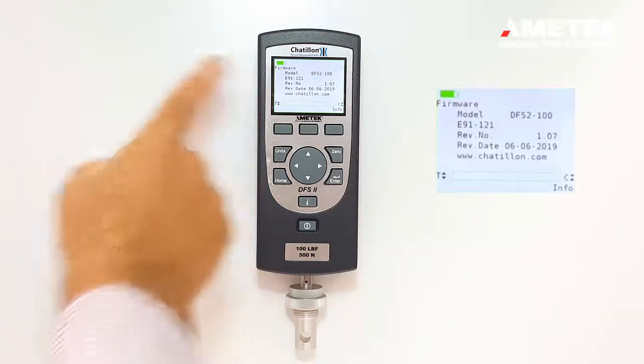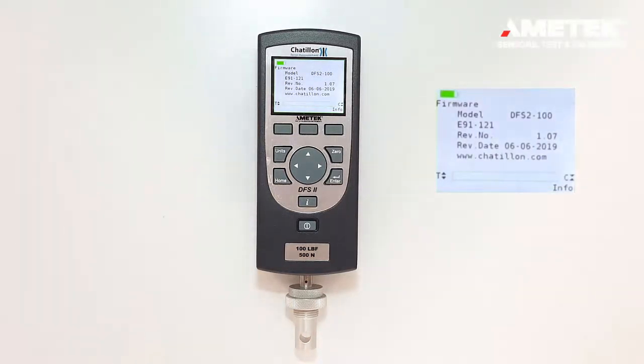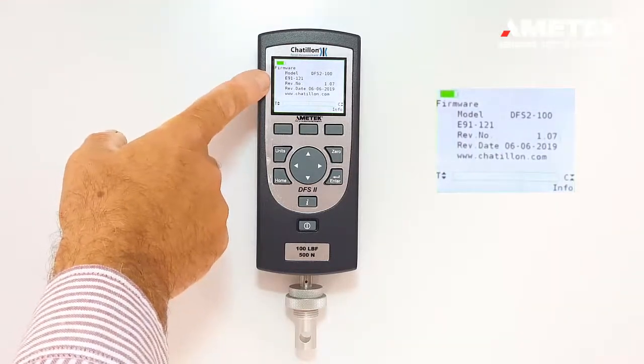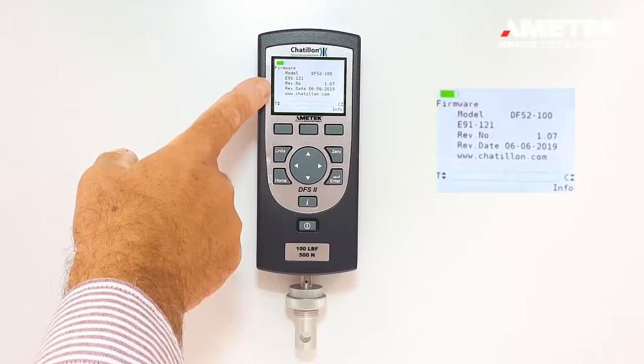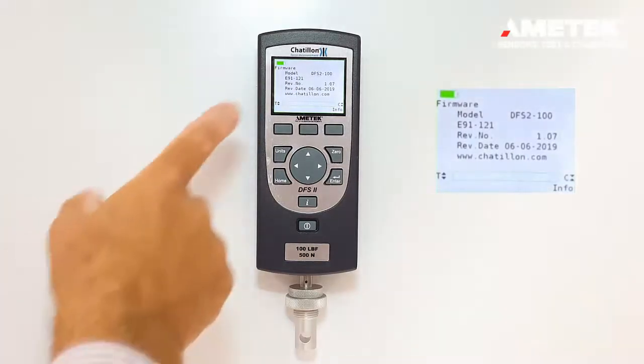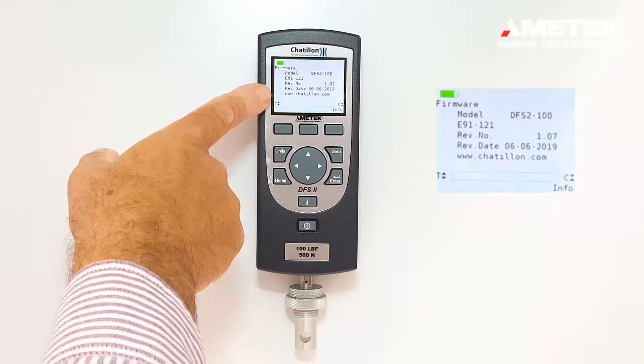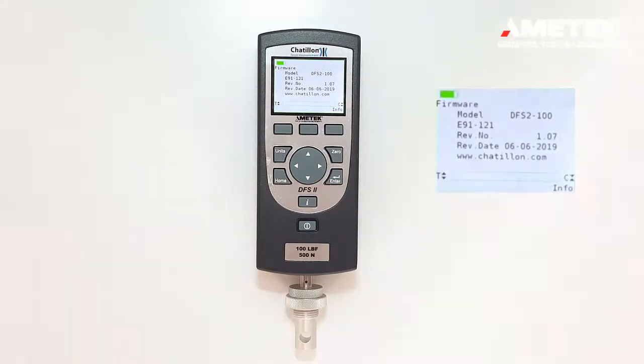It will show the model number, the capacity, the part number for the firmware, and the revision number of the firmware. So 1.07 has been released on 6-6-2019, and it's the latest firmware available as of July 2020.